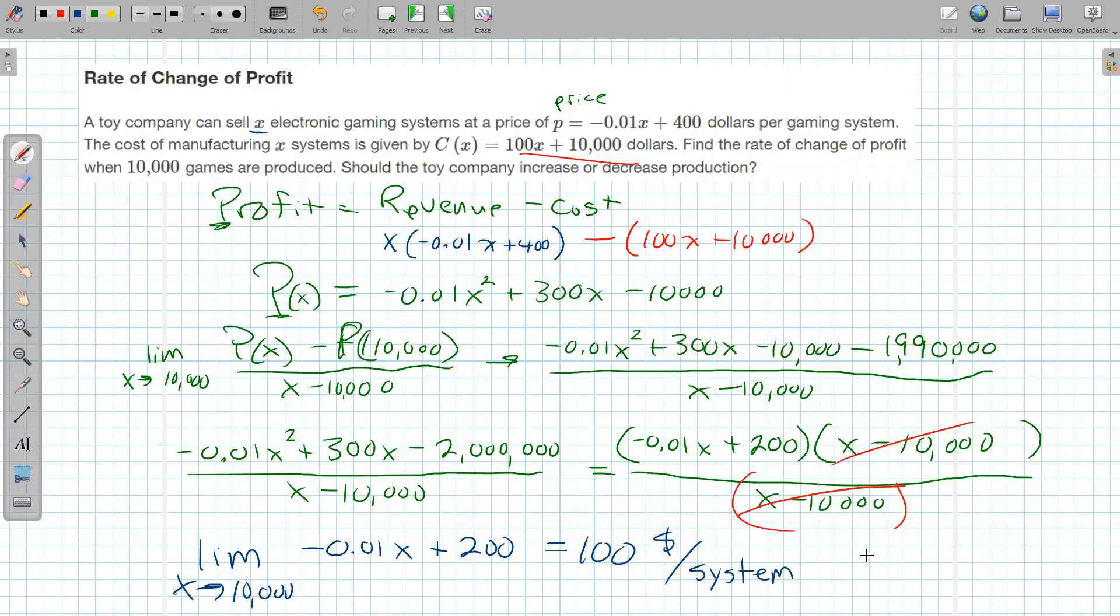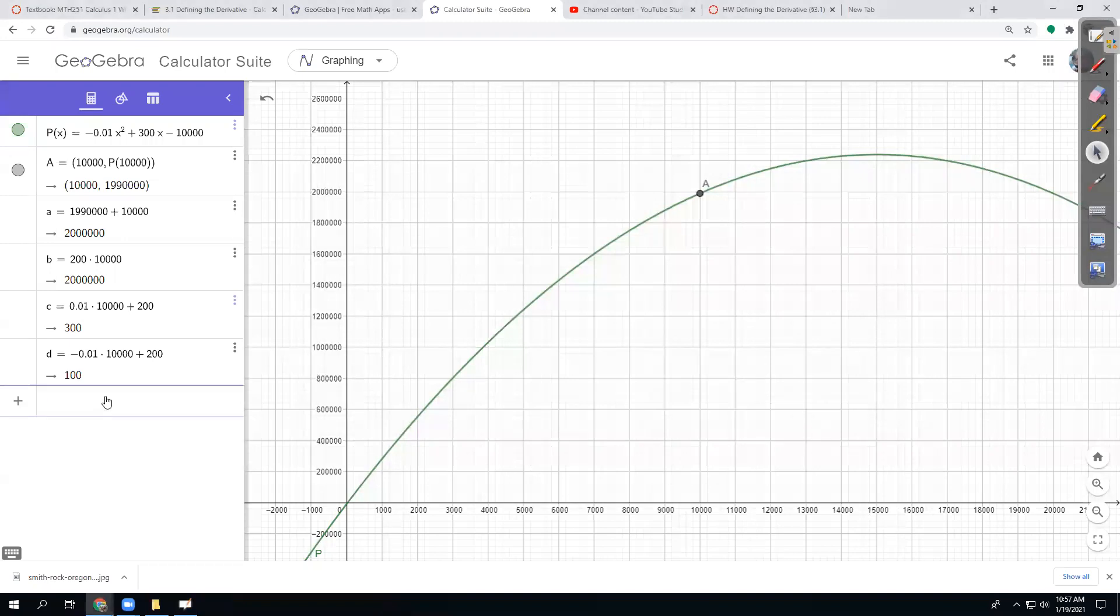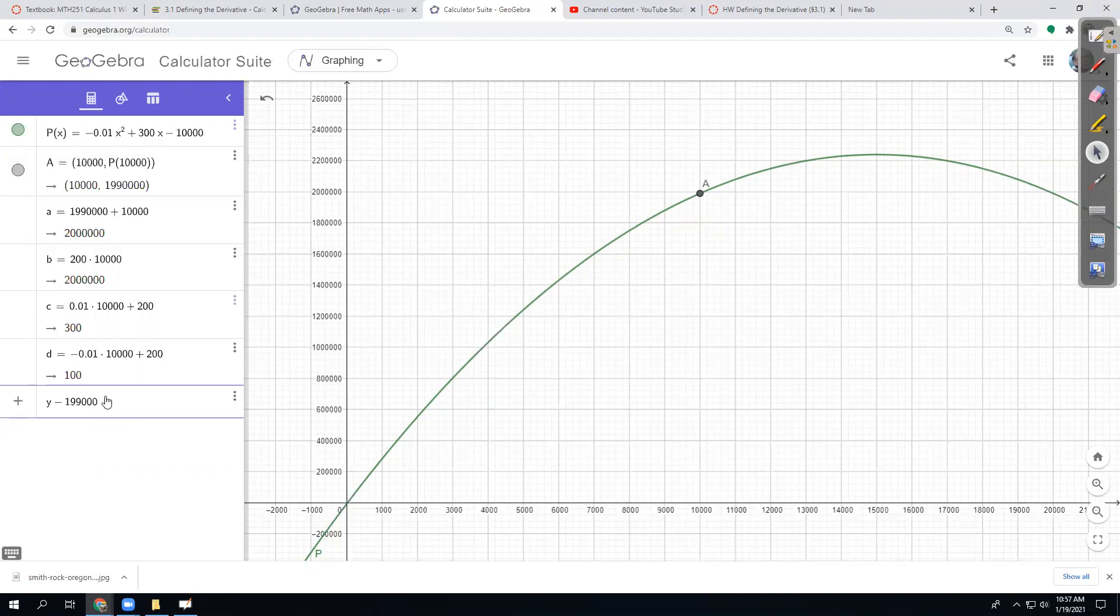So their profit is increasing at this point. So since profit is increasing, then they should increase production so that they can make more money. If profit was decreasing at this point, we would say, whoa, slow down. We're making too many and we're not making enough money off each one is basically what this is telling us right here. We have increasing profit and we can see that here in the graph. So I can graph that tangent line by taking y minus the y value there, which is 1,990,000 equals the slope, which is 100 times x minus 10. So there is that lovely tangent line giving us the rate of change of profit at that instant, that point in their production where they're making and selling 10,000 units. So if they increase production, then they're going to have more profit. We can clearly see here. Nice. Thanks for playing.